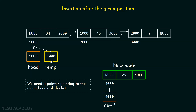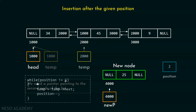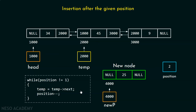First, we will keep a pointer temp. This pointer is initially pointing to this node, and later it will point to this node. We can do this with this piece of code. I have kept one position variable which is storing the value two, because we need to add the node after position two. This position variable will help us in moving the temp pointer.